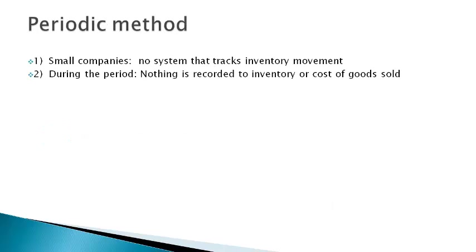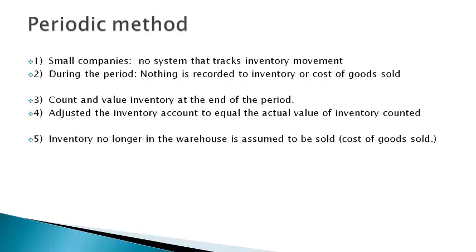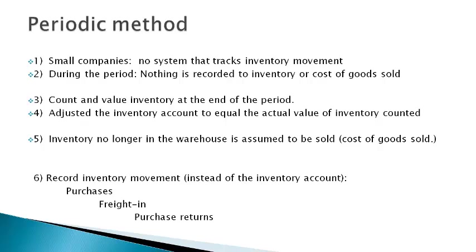The periodic method is commonly used by small companies or companies with small quantities of inventory that do not have elaborate computer systems to track every move of inventory. Nothing is recorded to change the inventory account during the period. Inventory is counted and valued at the end of the period, and the inventory account is adjusted to equal the actual value on hand. Inventory no longer in the warehouse is assumed to be sold and reported as cost of goods sold. The purchases, freight in, and purchase returns accounts are used in place of the inventory account.